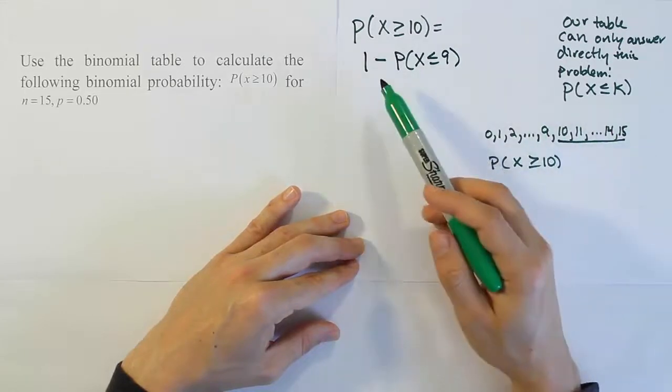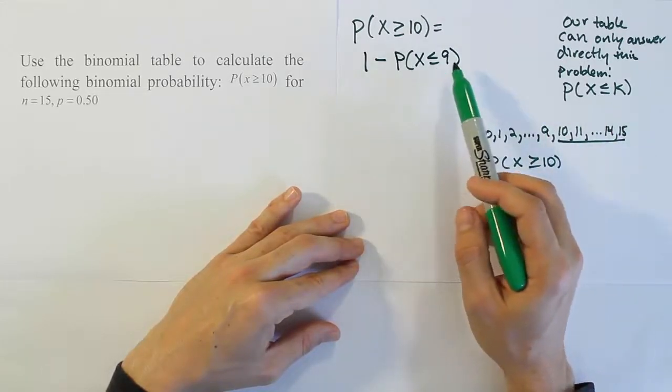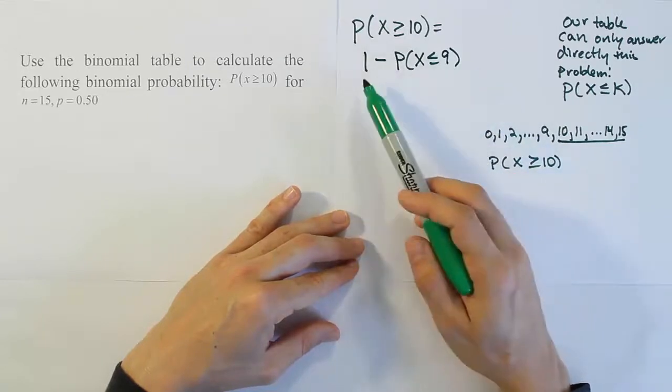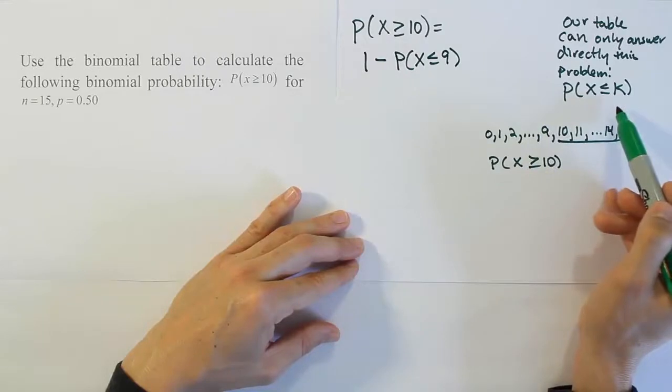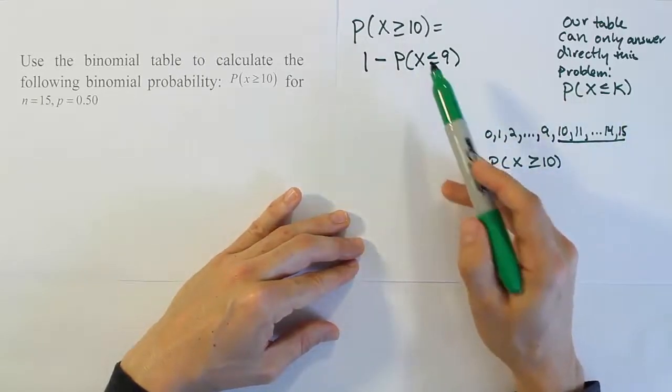And it turns out, of course, as you can see, that 1 minus the probability of x less than or equal to 9 can be done with the table because 1 is just a constant and this is the exact structure of the type of problem my table can do. So I have to use this to get my answer.